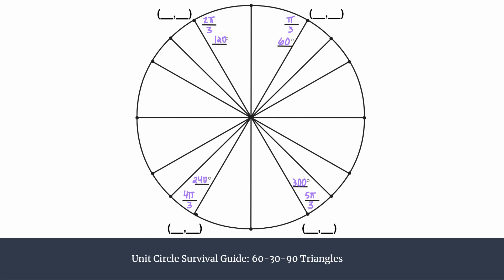We are trying to label this ordered pair. Our unit circle is centered on the origin, and we call it a unit circle because its radius is one — keep that in mind, we're going to make use of that fact in a few minutes. So let's sketch in a triangle and remind ourselves of this triangle's side ratios.